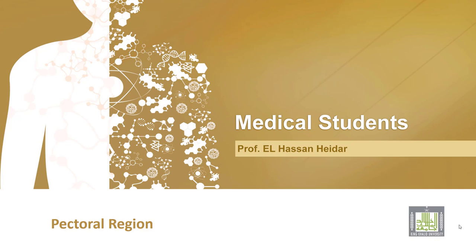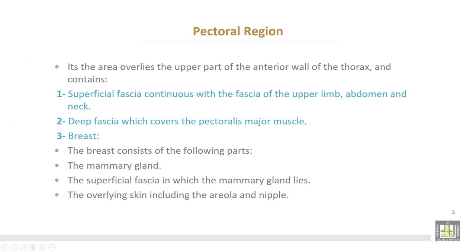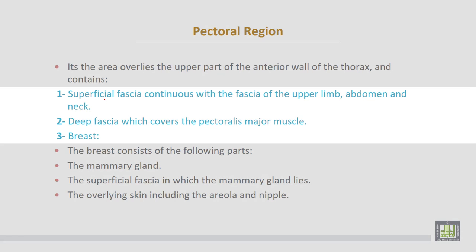The pectoral region is the area that overlays the upper part of the anterior wall of the thorax. It contains the following: number one, superficial fascia, which continues with the fascia of the upper limb, abdomen, and neck.